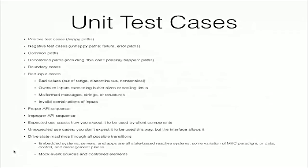Your unit test cases should test the positive cases — the happy paths; the negative test cases — the unhappy paths, failure or error paths; the common paths and the uncommon paths, including the 'this can't possibly happen in my code' paths. Test boundary cases, bad input cases such as bad values, oversize inputs that exceed your buffer sizes or scaling limits, malformed messages, strings and structures, and invalid combinations of inputs. Test the proper API sequence — complex APIs require a set of calls to perform something — and also try improper API sequences. Test your expected use cases and your unexpected use cases — if the interface allows it, you better test it.